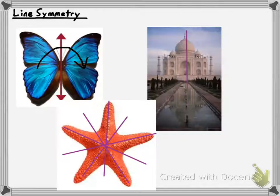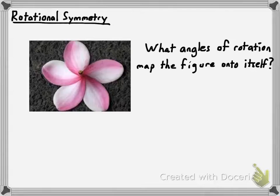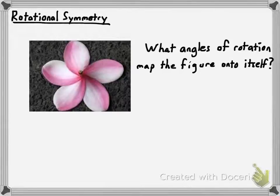Nothing more needs to be said about line symmetry. You get that concept pretty well — you've worked with it all your life. Now for rotational symmetry. Rotational symmetry is really cool. It's something that you've seen and maybe just never put a term to before. Rotational symmetry is when it's possible to rotate a figure around its center and get it to map onto itself.